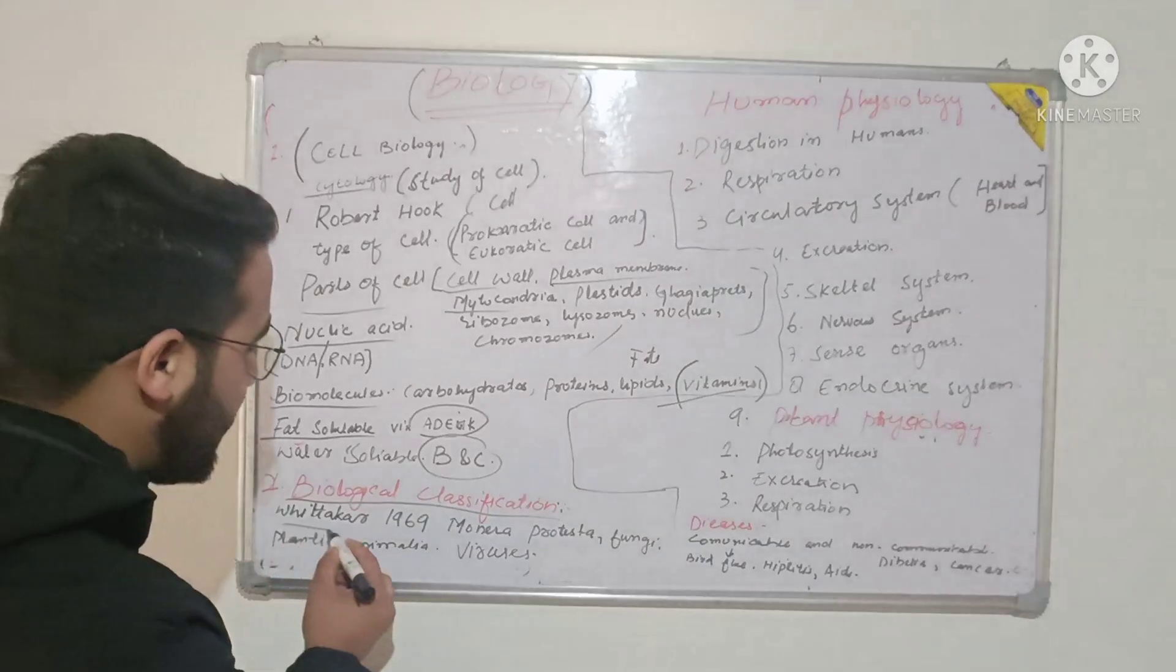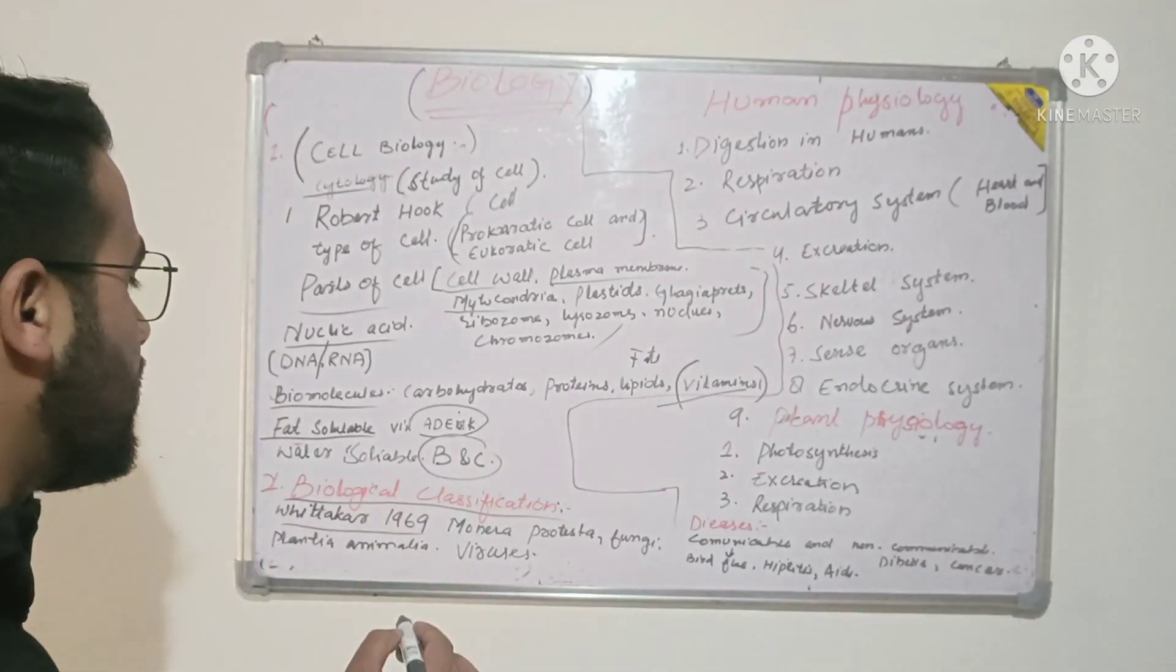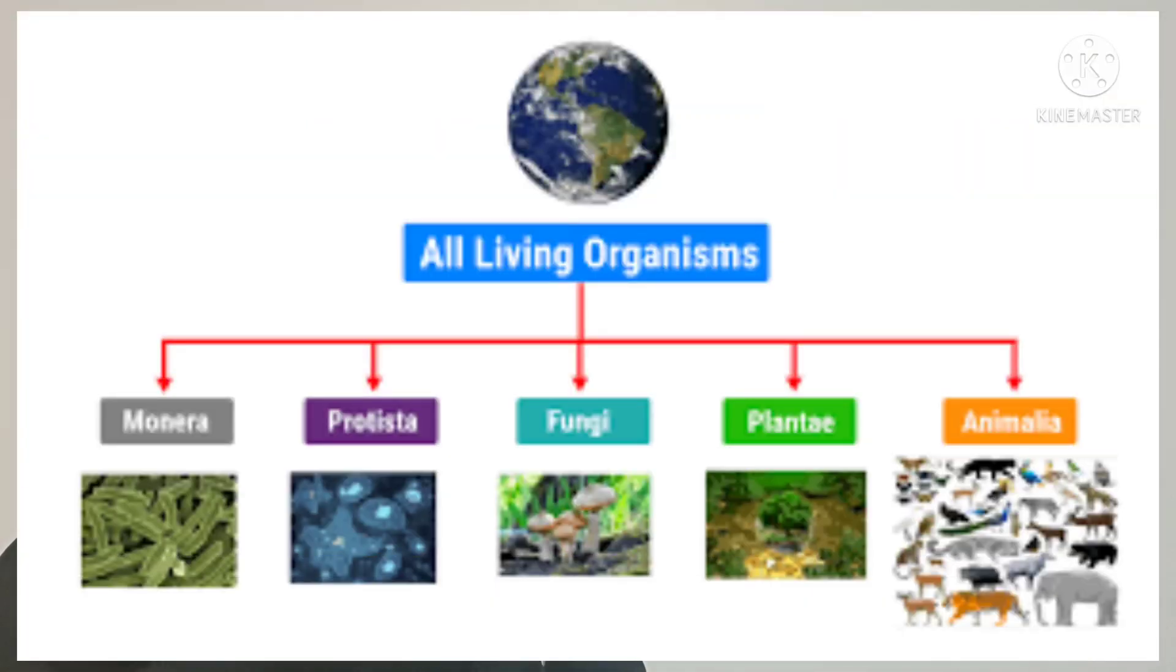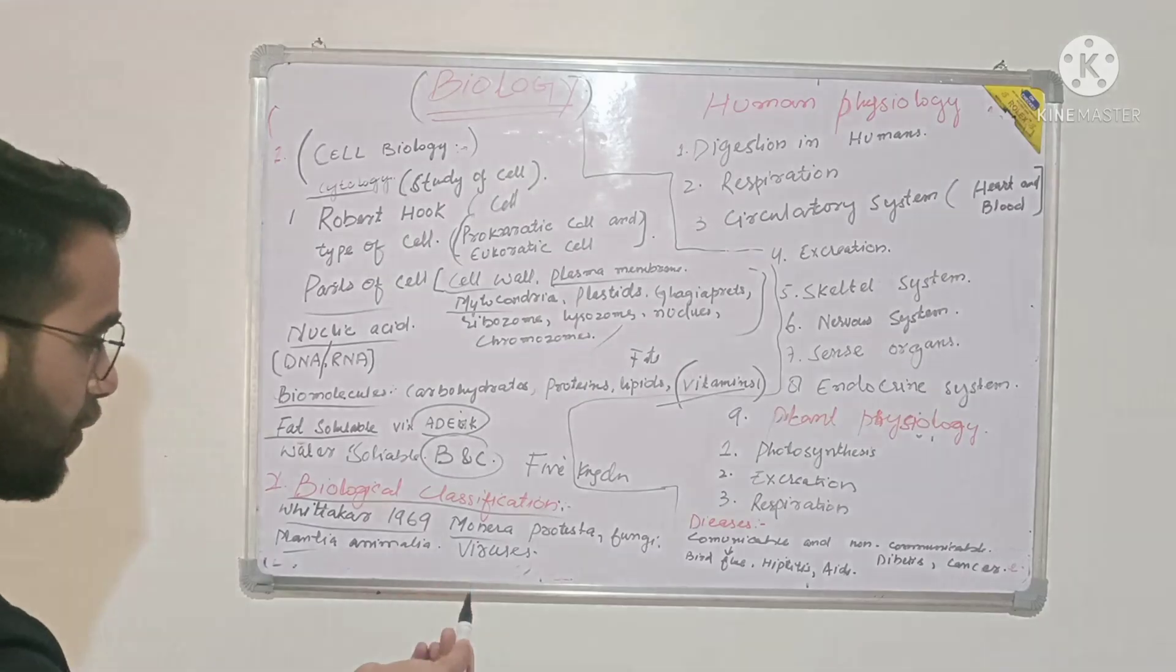Finally, Whittaker in 1969 proposed the 5 Kingdom classification. You don't have to go deep, just remember Whittaker's 5 Kingdom classification: Monera, Protista, Fungi, Plantae, and Animalia. These are the 5 Kingdoms.